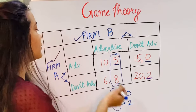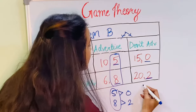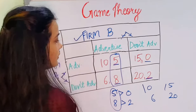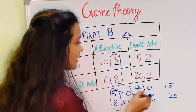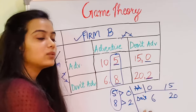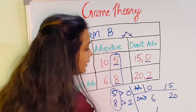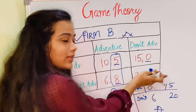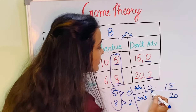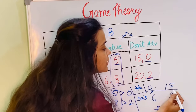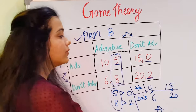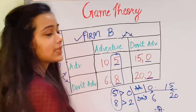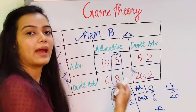Now let's consider Firm A's case. Firm A's payoffs are: 10 and 15 for advertising, and 6 and 20 for not advertising. Comparing horizontally: 10 is greater than 6, but 15 is not greater than 20. Since we cannot say advertising always dominates, Firm A does not have a dominant strategy — there is no single choice that is always best.